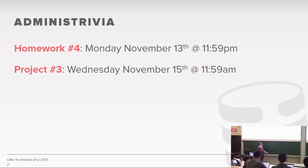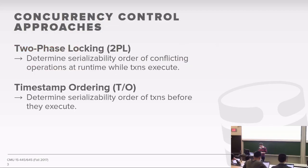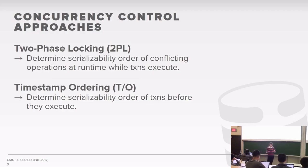To ground everyone with where we are in the semester: we introduced concurrency control as the mechanism the database system uses to allow multiple transactions to run at the same time, read and update the database, but maintain the illusion that they are running in isolation. This is serializable isolation — the strongest guarantee you can provide.